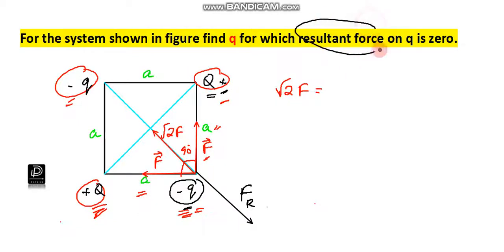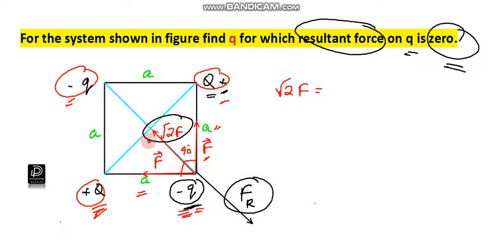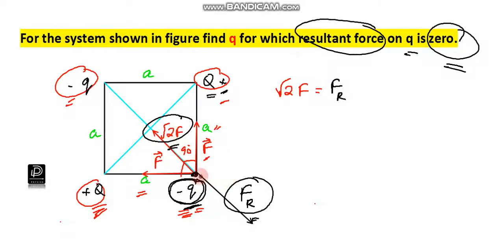It is given that the net force on q must be equal to zero. There are now two forces acting on this charge: F_R and root 2 F. For the resultant to be zero, these two forces must be equal and opposite. That means root 2 F must equal F_R.